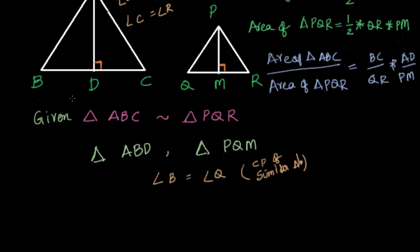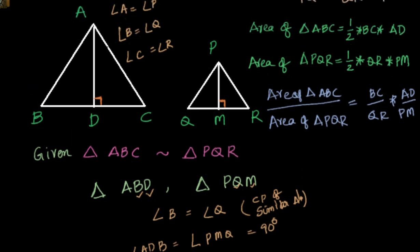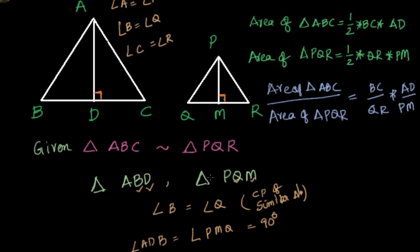We know that angle B equals angle Q. Not only that, we also know that angle D equals angle M, because angle ADB equals angle PMQ equals 90 degrees. Because AD and PM are respectively the altitudes of triangle ABC and PQR, making 90-degree angles. So we know that these two triangles are similar. This is nothing but AA similarity, because we know that two angles of these two triangles are equal.